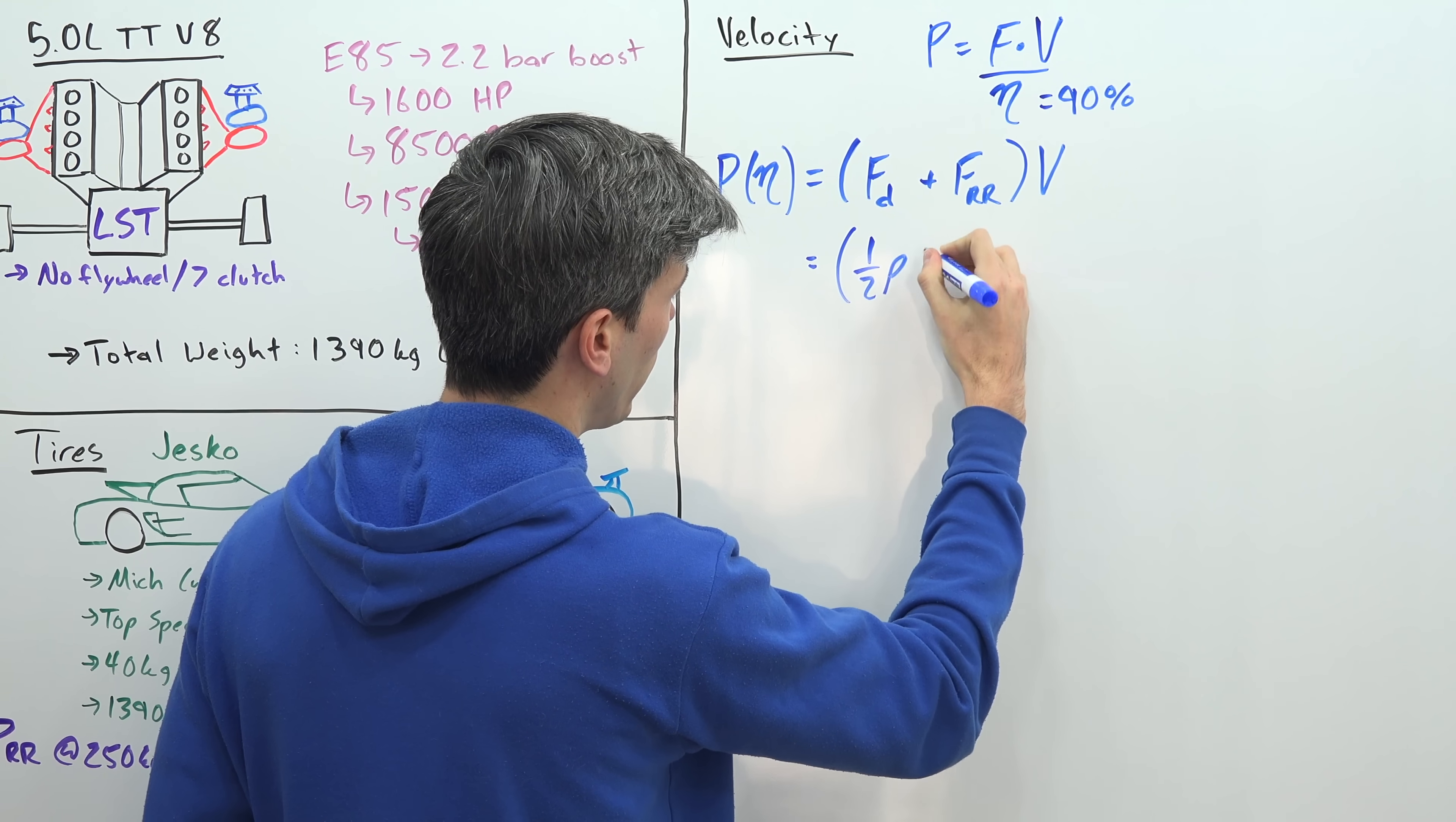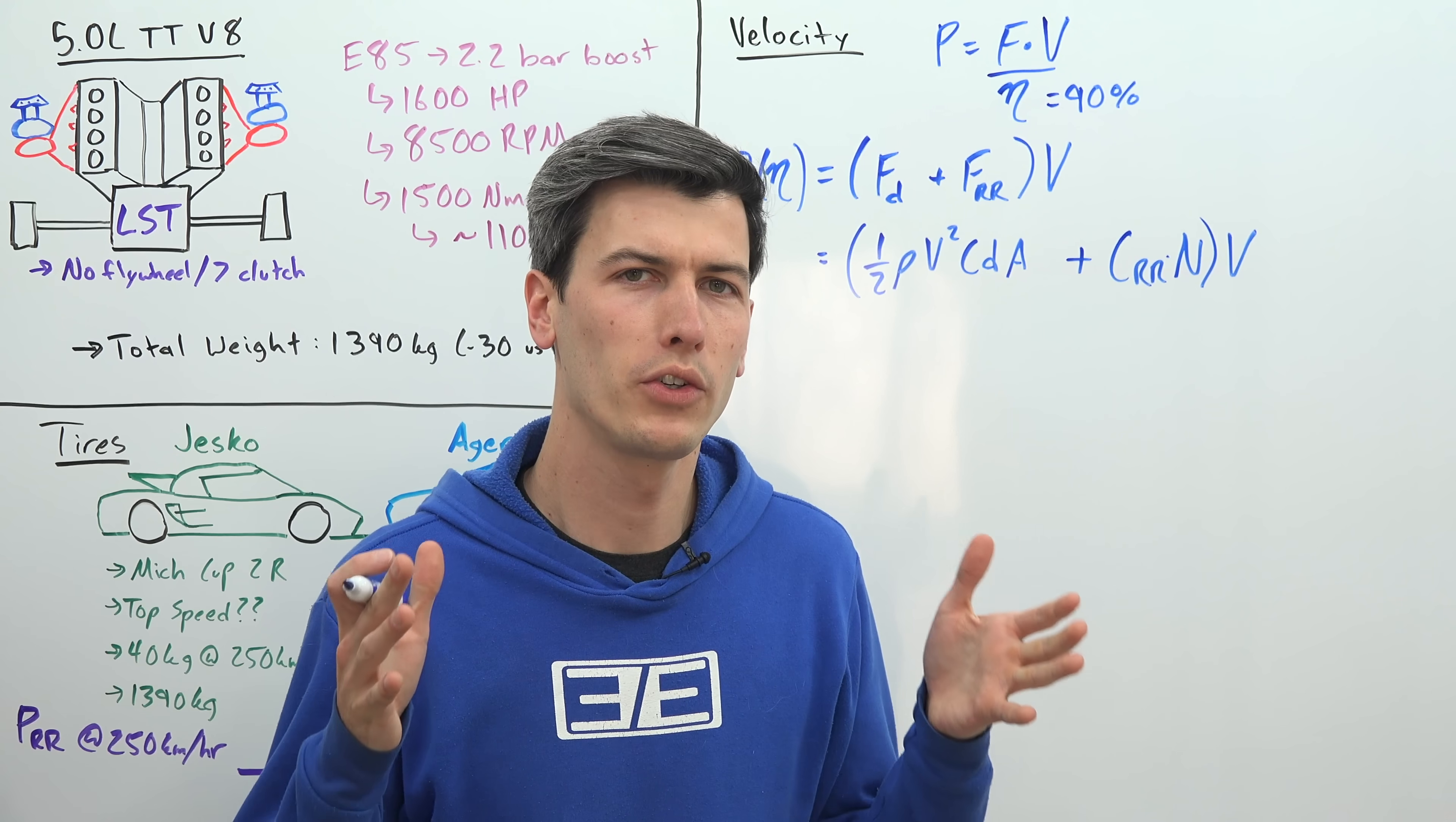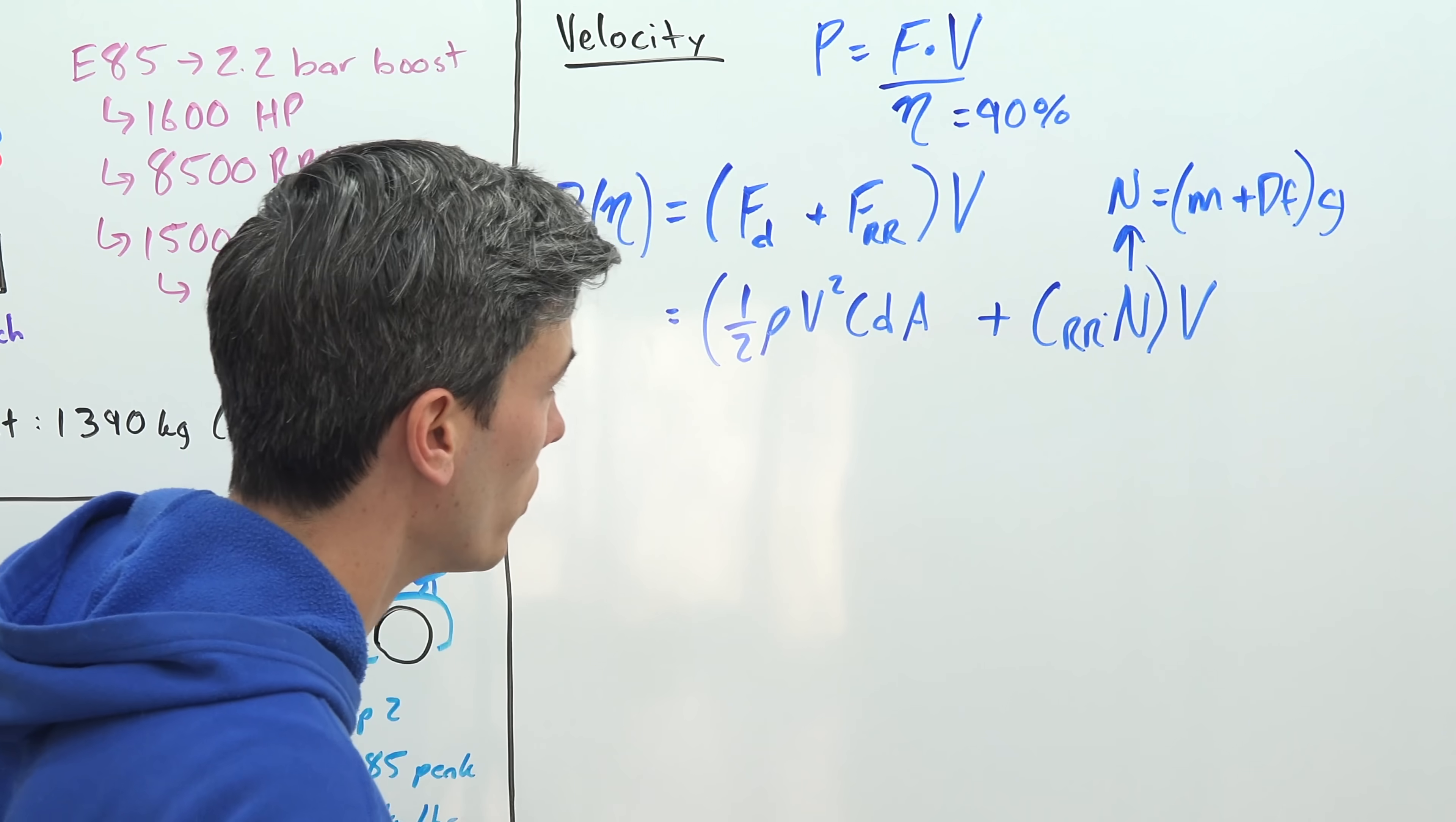So our total power multiplied by our drivetrain efficiency is going to be equal to the sum of our resistive forces. So we have the force of aerodynamic drag plus we need to add the force of rolling resistance, and then all of that is going to be multiplied by velocity. So we can set this equal to the force of aerodynamic drag, which is equal to one-half air's density multiplied by velocity squared, multiplied by our drag coefficient, multiplied by the frontal area of the vehicle. And all of that we are then going to add to the coefficient of rolling resistance multiplied by the normal force, and then all of that is multiplied by velocity. So the normal force can be calculated by figuring out how much force is the car actually pressing down on the ground. So this is going to be equal to the mass of the car plus the amount of downforce that it produces, which Koenigsegg provides in kilograms, and then we're going to multiply this by gravity to get this in units of newtons.